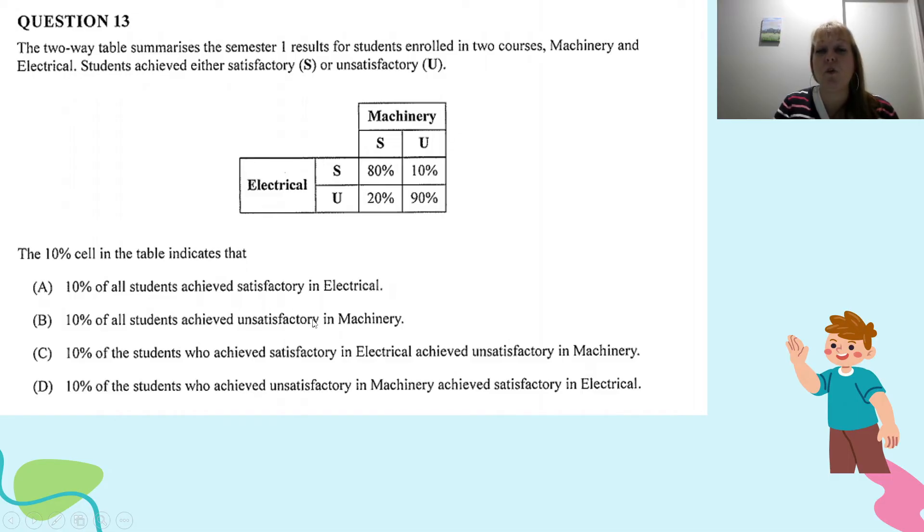This is looking at one variable only, how many passed Electrical. We don't know. Same with Machinery, we just don't know. We only know how they did in Machinery versus Electrical. It's like a bivariate data analysis. It's two things that are being compared. So A and B are options that are not possible.